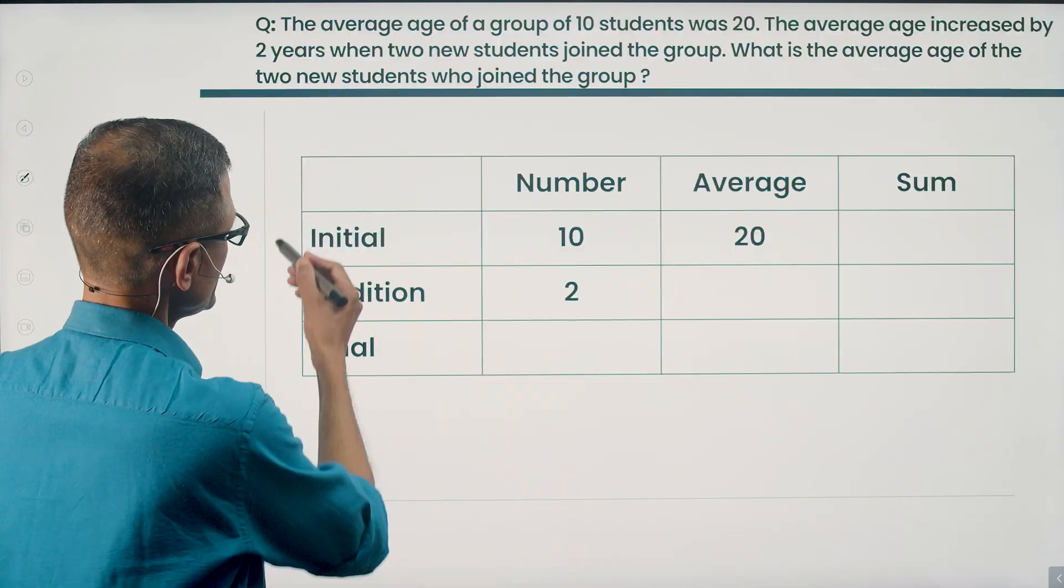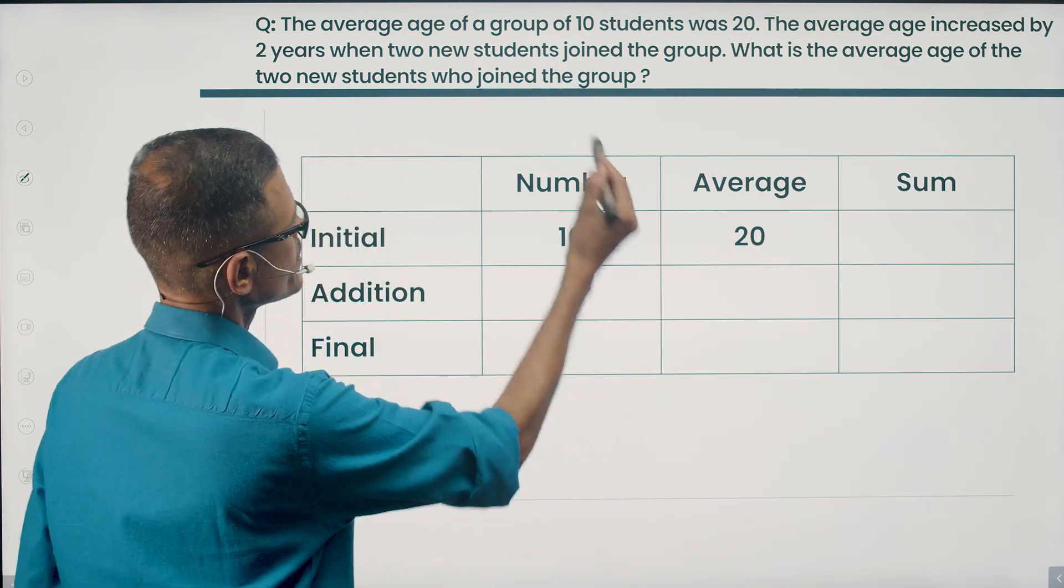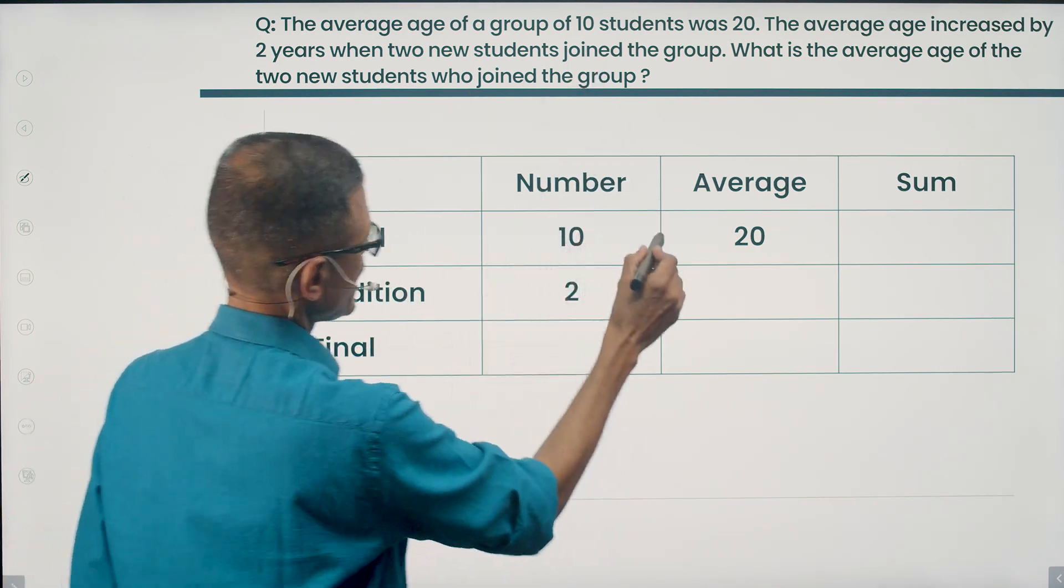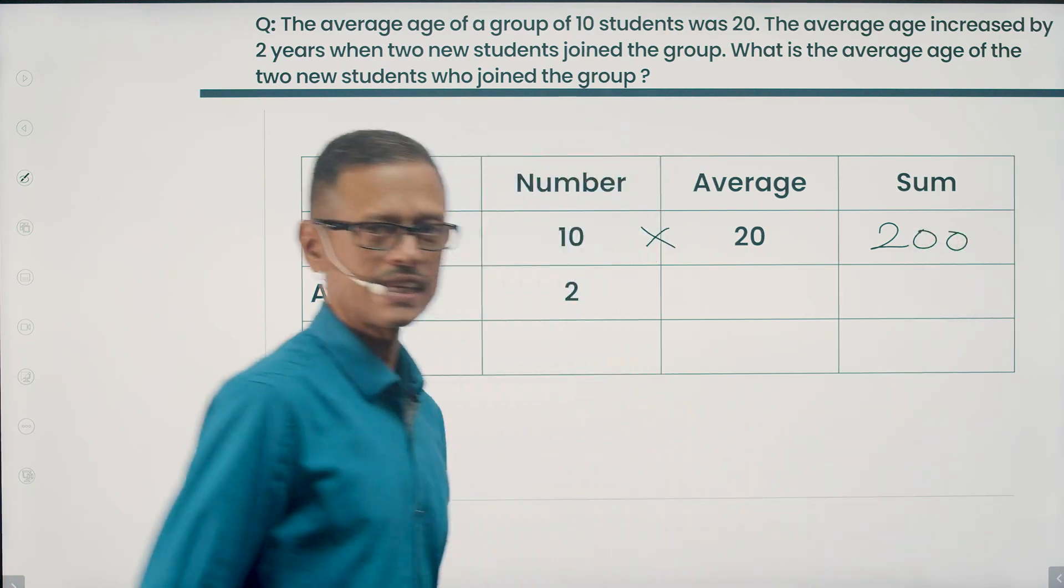Let's quickly fill in what data we have. Initially 10 students, their average age was 20 years. So 10 times 20 is equal to 200 is the sum of their ages.